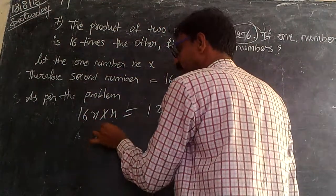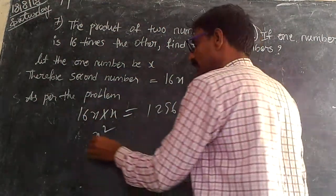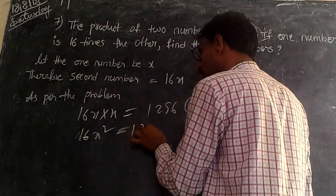x into x, the x square, we know this. So, 16x square is equal to 1296.